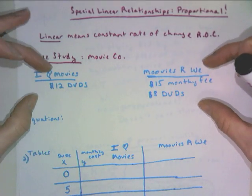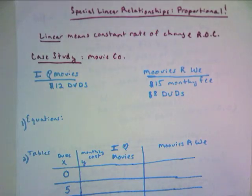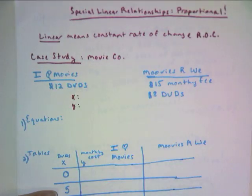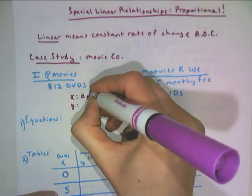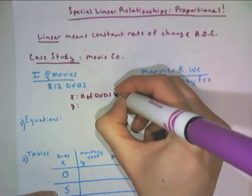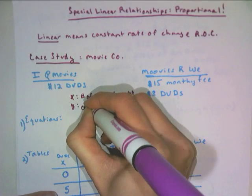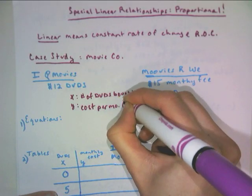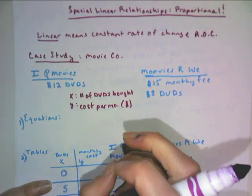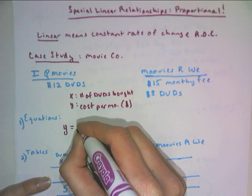So already we're pretty good at taking these word problems and these scenarios and writing the equation. So we'll go ahead and do it for these guys, and we will define our variables X and Y. So in this case, the number of DVDs bought is our independent. And then what depends on the number of DVDs bought? Well, the cost per month in dollars. Don't forget your unit. So with this one, we don't have a flat fee. We don't have anything that you pay every single month. So your cost is just Y equals 12X.